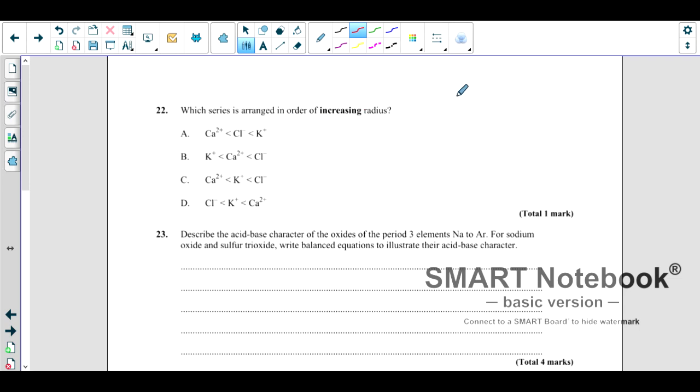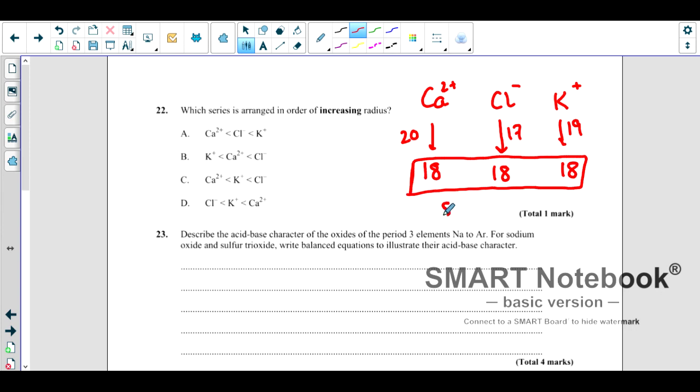Which series is arranged in order of increasing radius? Here we want to talk about radius. These are all isoelectronic species because we have Ca2+, we have chlorine negative, and we have K+. Ca2+ means how many electrons are there? 18, because two electrons are lost. Chlorine has 17, one electron gained, again 18. And potassium is 19, one is lost, so here is again 18. So these are isoelectronic species. We discussed this before. Size is inversely proportional to atomic number. Here we want increasing radius, so the smallest radius will be of which one, which has the biggest size. So the correct answer here is C. We want to write in increasing radius, so the smallest radius will be of that one which has the highest size. So Ca2+, then K+, and then Cl- is the correct answer.